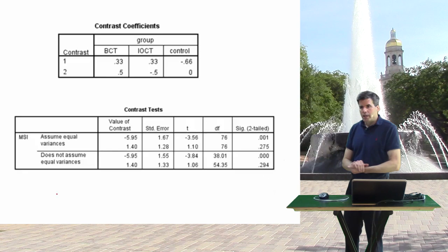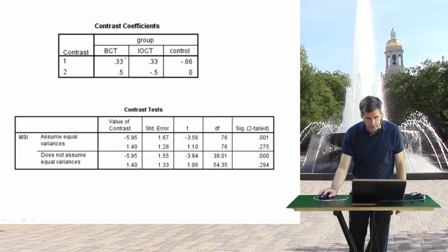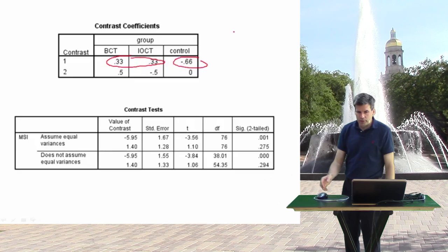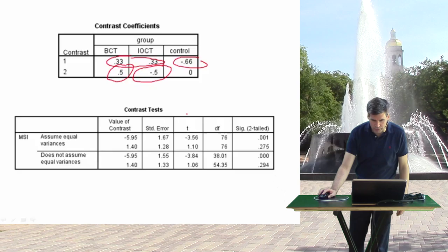So we can see we indeed have two orthogonal contrasts. Contrast one is comparing the two treatment conditions with the control group, and contrast two is comparing behavioral couple therapy with insight-oriented therapy — comparing the two treatment conditions against each other.